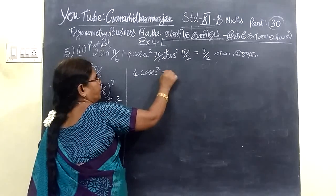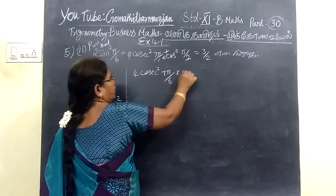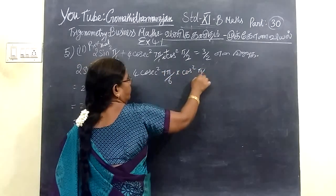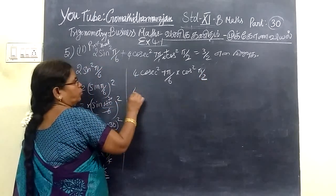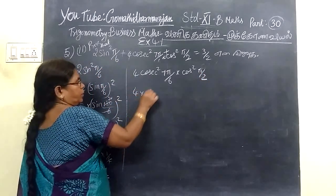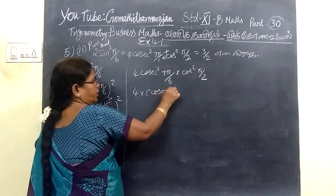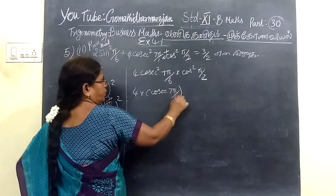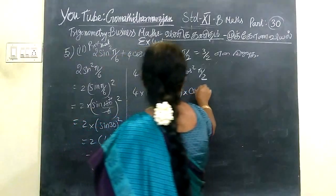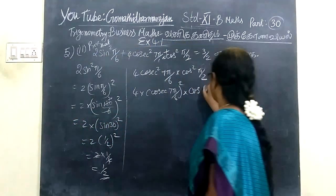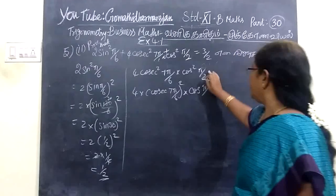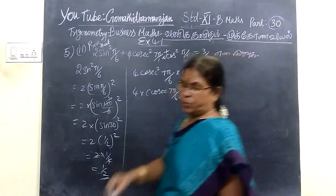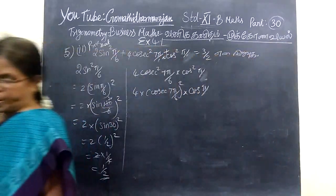The next part is 4 into sin²(7π/6) into cos²(5π/2). I will draw the position. So we have sin²(7π/6) into cos²(5π/2) or cos²(5π/3).